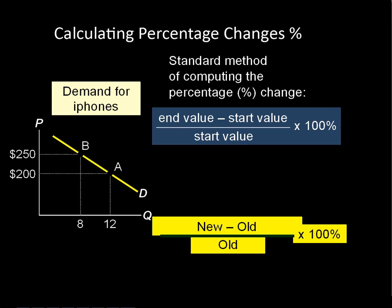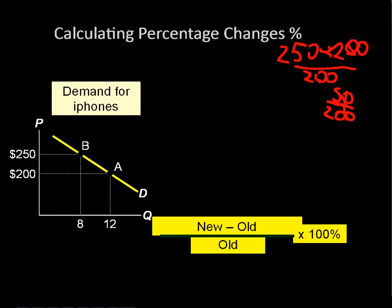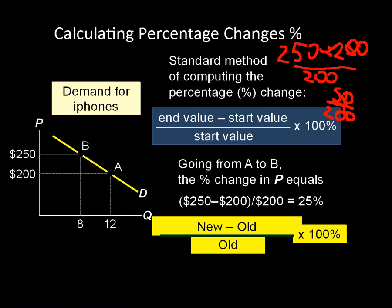To do a percent change from 250 down to 200, plug it into the formula: 250 minus 200 over 200. We calculate these in absolute values, so even if you get a negative number that's okay. That gives us 50 over 200 — cross out the zeros and we get 5 over 20, which is one-fourth, so it's a 25% price change.